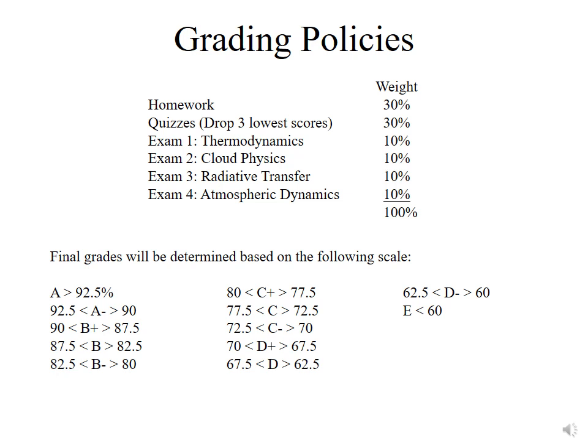Your grade will be determined through homework, quizzes, and the exams. Homework makes up 30%, quizzes make up 30%, and each exam makes up 10%. I will drop the three lowest quiz scores as indicated before. The final grade uses a standard scale: 90, 80, 70, 60. So if you want to get an A, you need 92.5% or better; an A- is between 90 and 92.5%, etc.